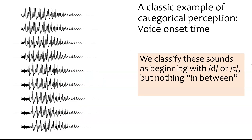A classic example of categorical perception in speech is the perception of voice onset time. From top to bottom, we have a continuum between 'dear' and 'tear.' We would classify the beginnings of these sounds as beginning with either D or T, but not something in between D or T. So we would draw a category line, above which everything is D, and below which everything is T.